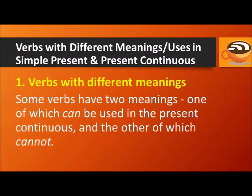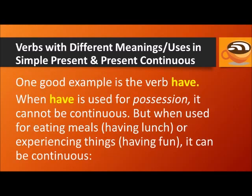Now let's look at some verbs with different meanings and uses in the simple present and present continuous. Some verbs have two meanings — one of which can be used in the present continuous, and the other of which cannot. One good example is the verb have. When have is used for possession, it cannot be continuous, but when used for eating meals or experiencing things, it can be continuous.